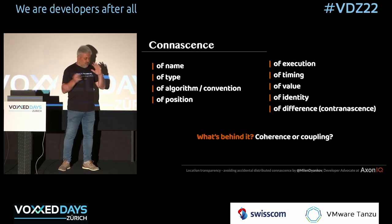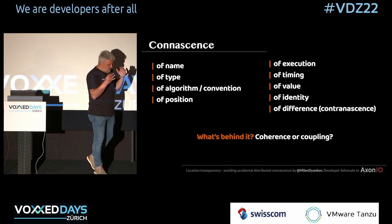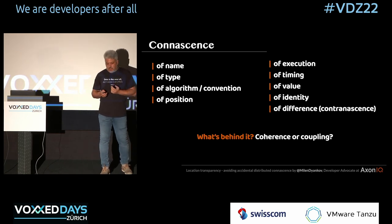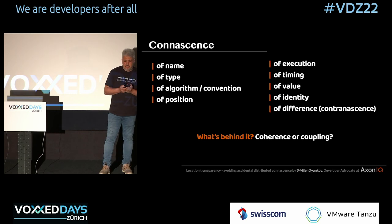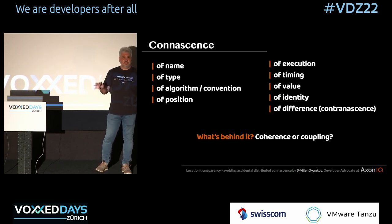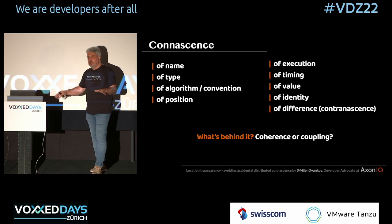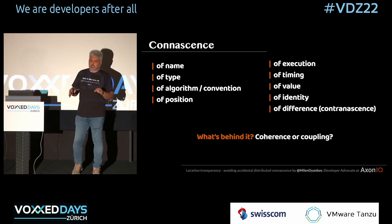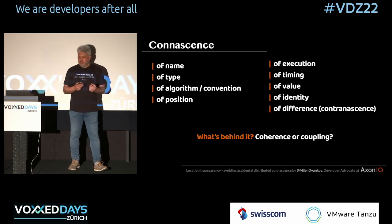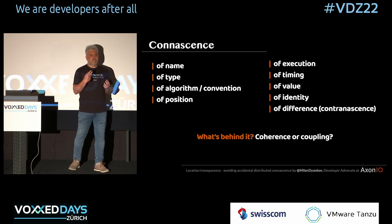So we discussed a few examples of connescence. The question is: we have connescence, there's no way around it - it exists, it will always be there. The question is, what causes it? Is it coherence, or is it coupling?